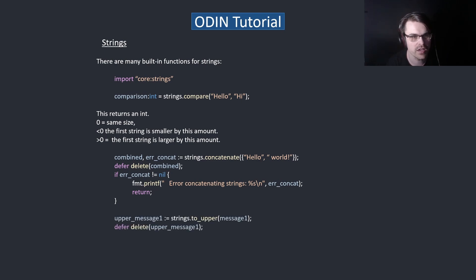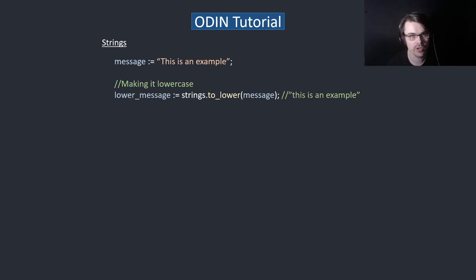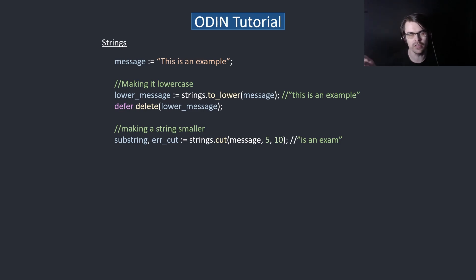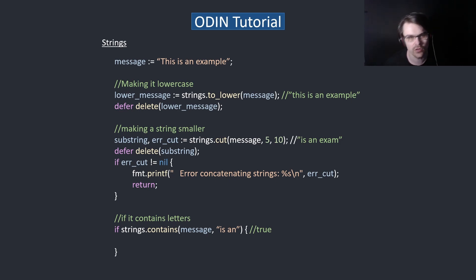There's an upper function — it will allocate on the heap because you don't know how big the string is, and you have to delete it. Making it lowercase is just to_lower, and again you need to delete that. I'm making a substring using the cut function. You have the string, the first index, and the end index, and there's an error that could happen. And contains will basically give you a bool if the string contains a substring or not.